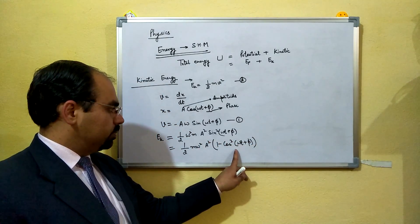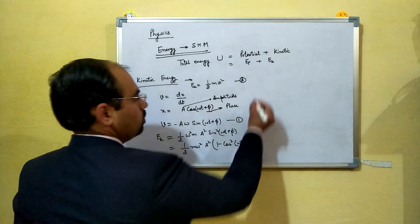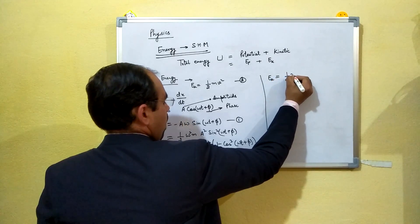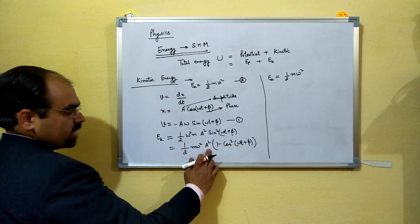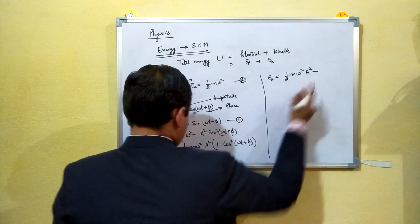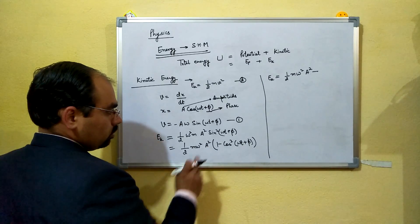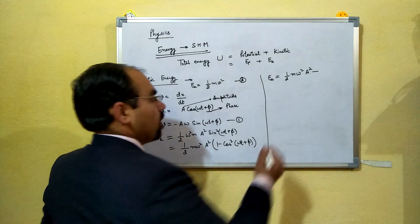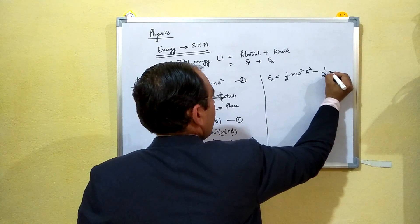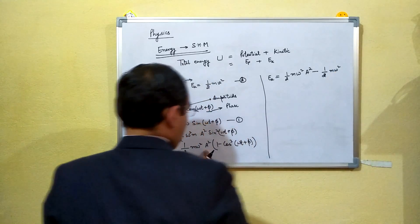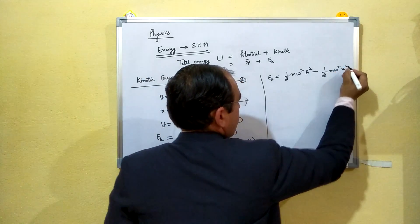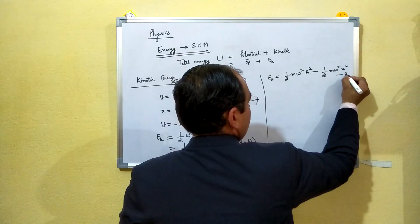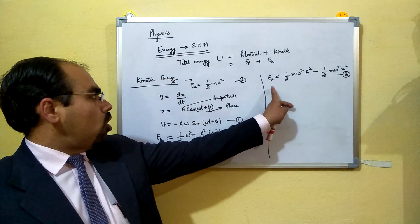Multiplying out, EK equals one half m·ω²·A² minus one half m·ω²·A²·cos²(ωt + φ). Since A·cos(ωt + φ) equals x, we substitute to get EK equals one half m·ω²·A² minus one half m·ω²·x². This is the final expression for kinetic energy.